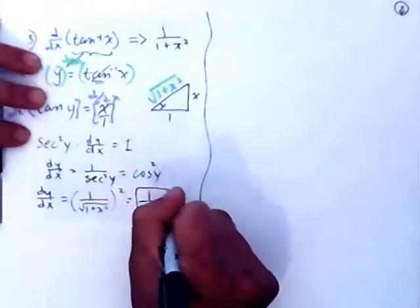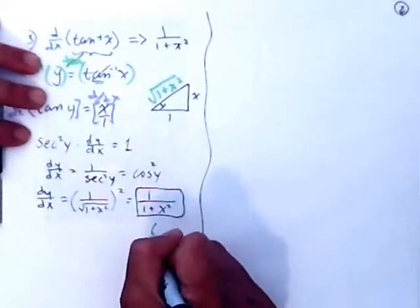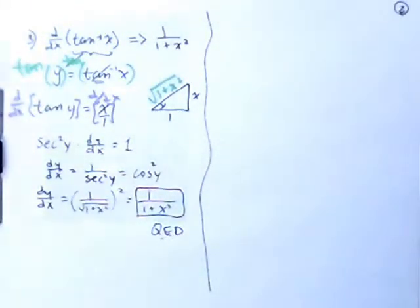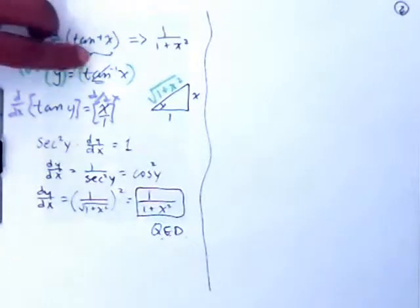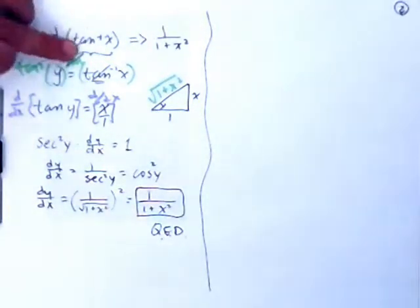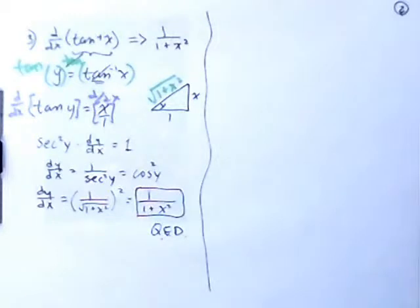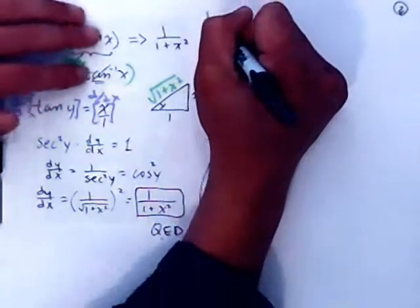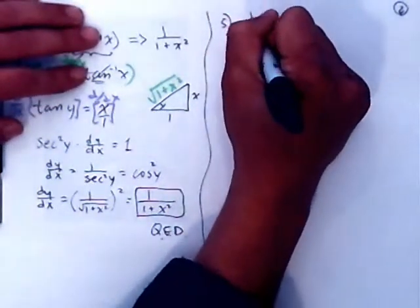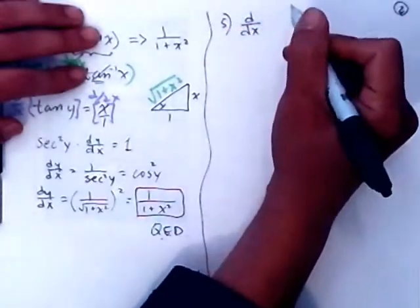There it is. QED. It wasn't too bad. Just remember that since this is a tangent inverse function, you have to take the tangent on both sides. Let's do equation number 5 now — the derivative with respect to x of...